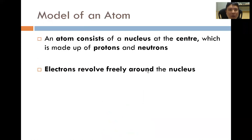To begin with, we would like to talk about the model of an atom. The model of an atom is such that an atom consists of a nucleus at the center, which is made up of only protons and neutrons. The electrons, on the other hand, the third subatomic particle, revolve freely around the nucleus.